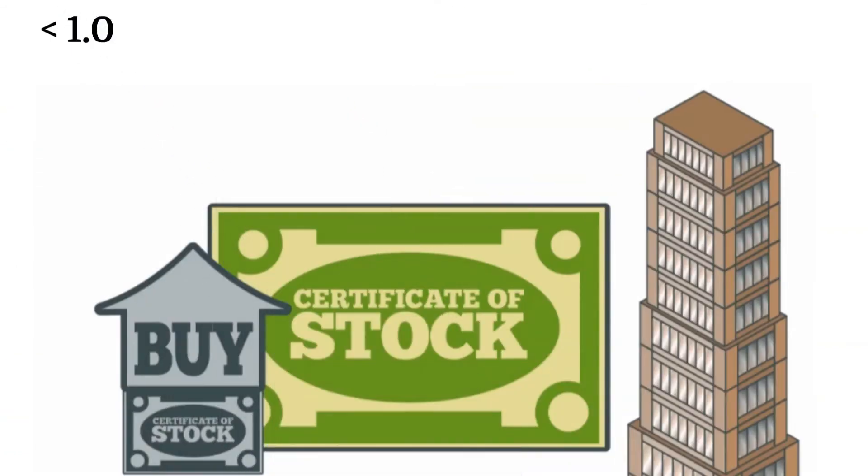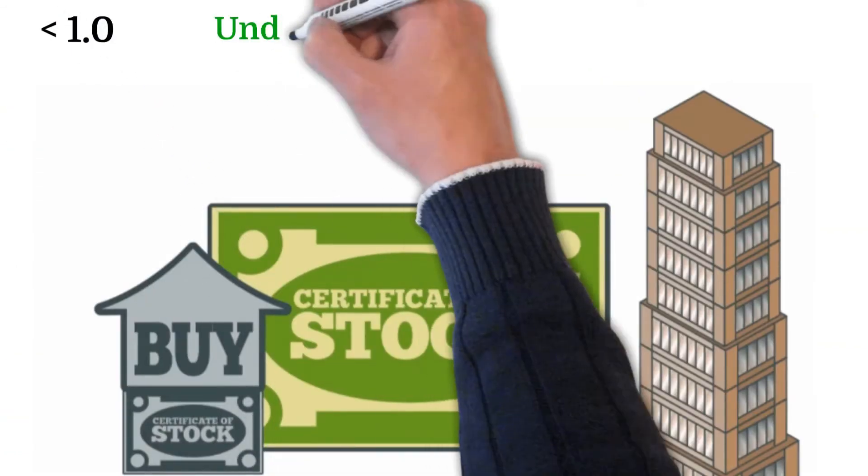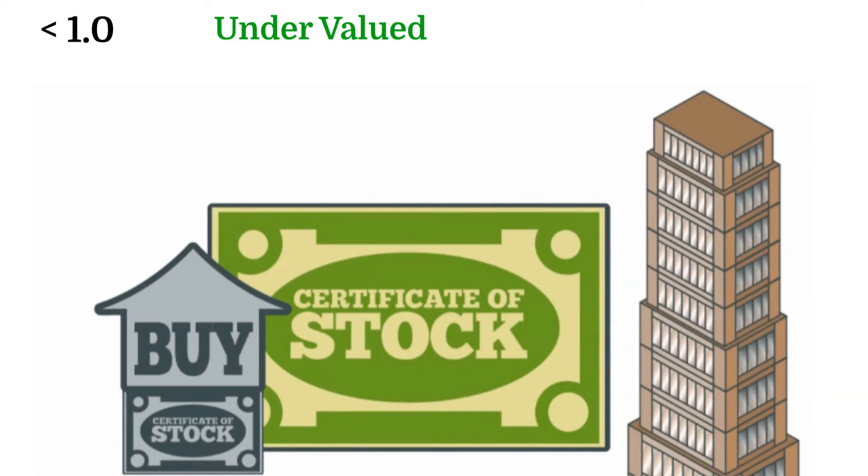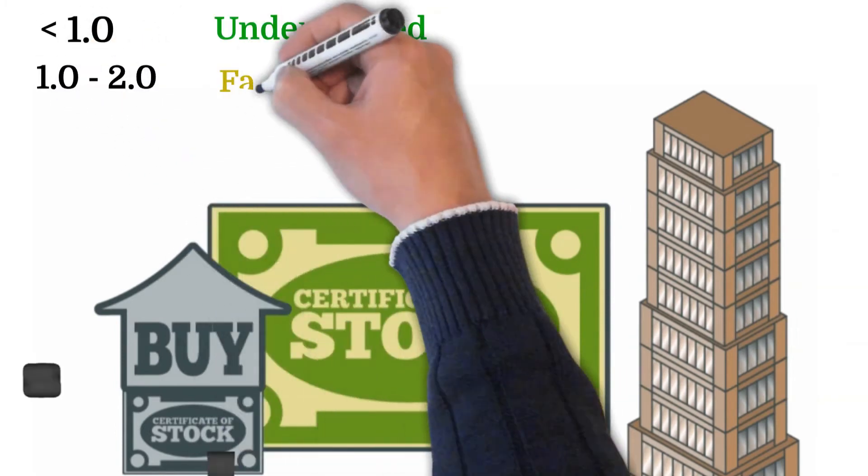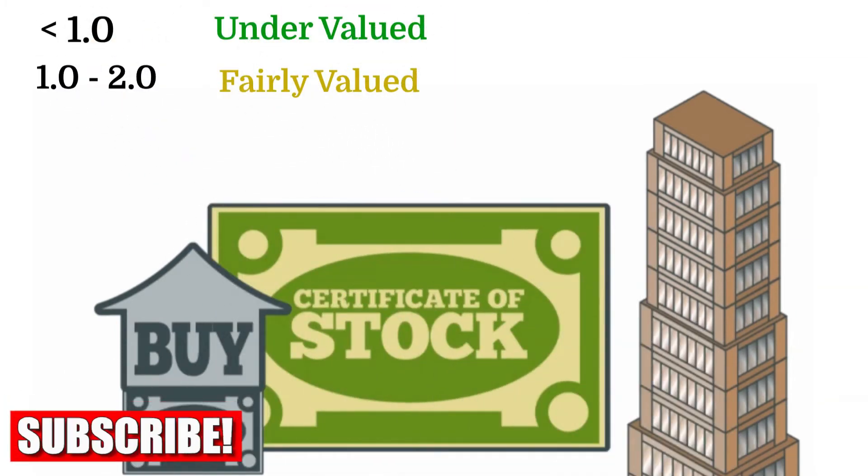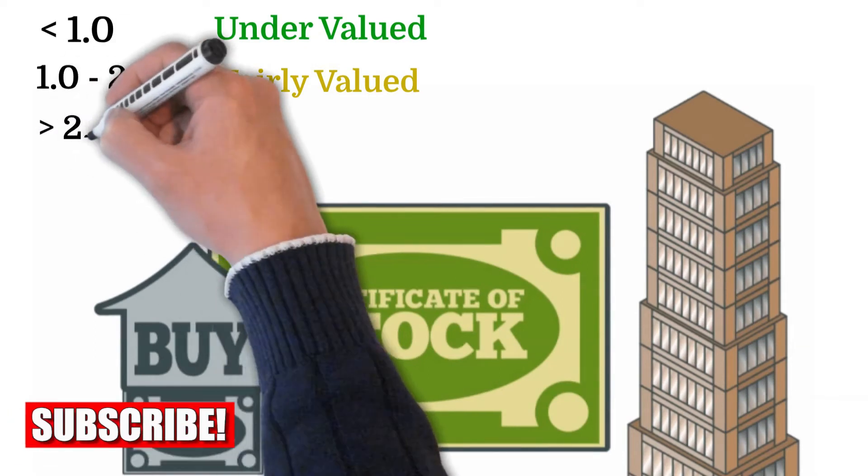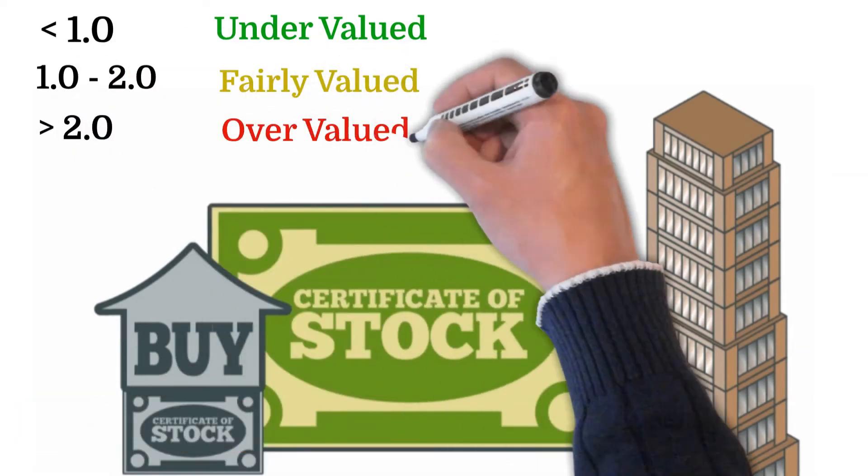A stock with a PEG ratio below 1.0 is typically considered undervalued, whereas stocks with PEG ratios between 1.0 and 2.0 may be considered fairly valued, and a stock with a PEG ratio greater than 2.0 is likely overvalued.